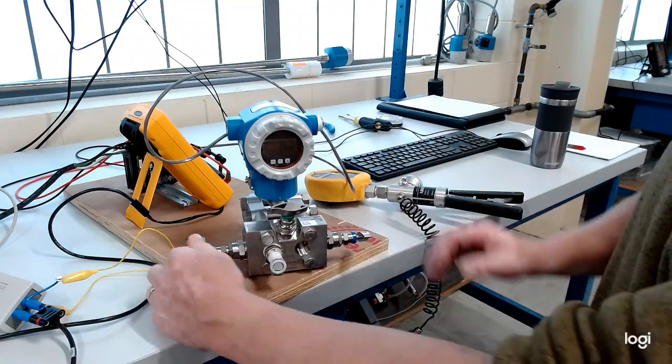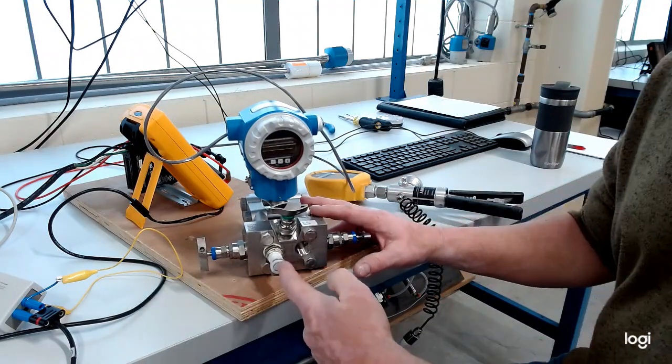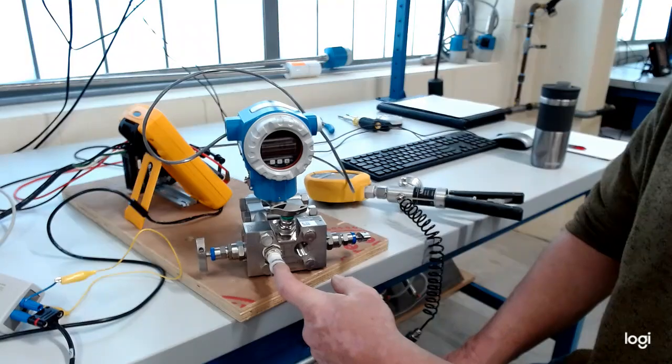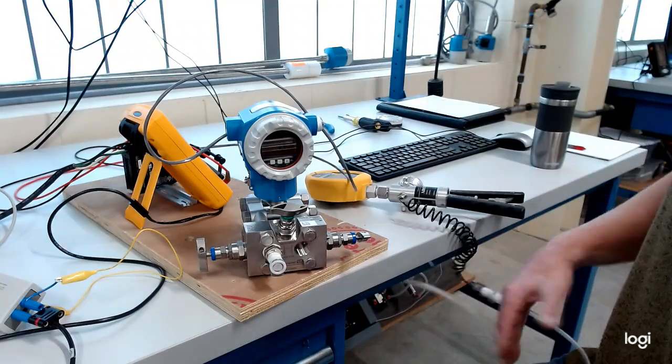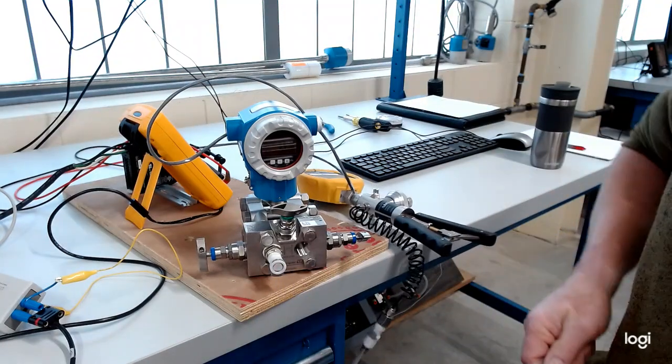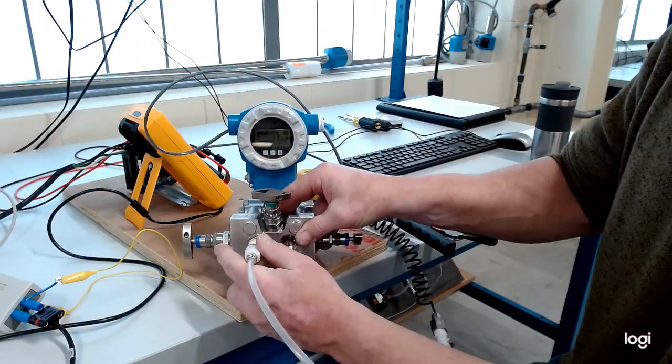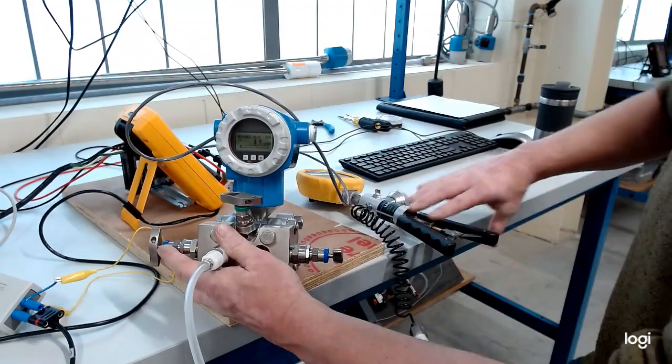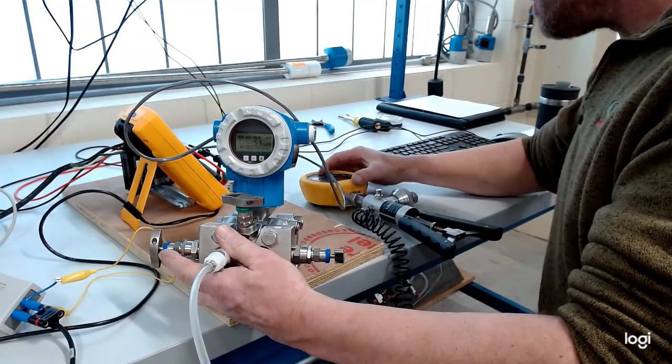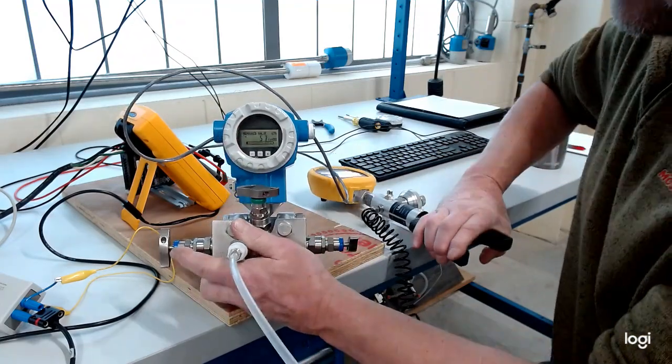Okay, so that being said, now we should be able to hook our pressure source into the high side and we should be able to see the pressure on this transmitter display go up. So let's give it a couple quick pumps here and we'll see if we can get it to move.